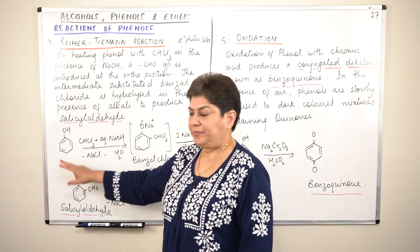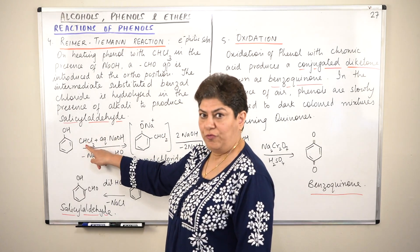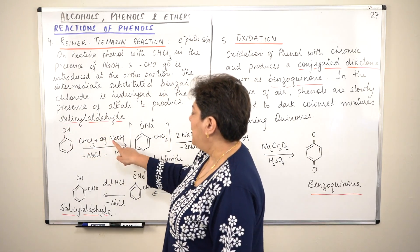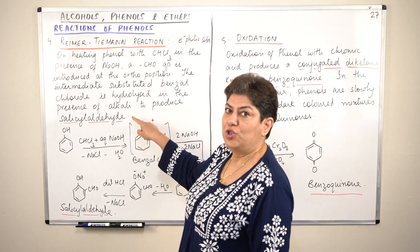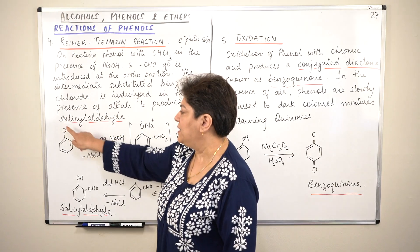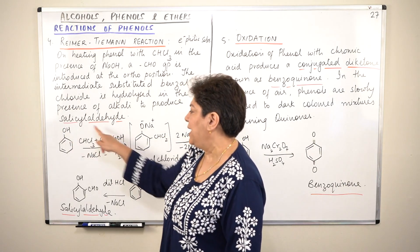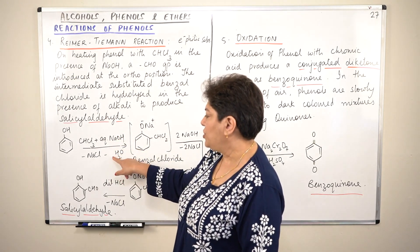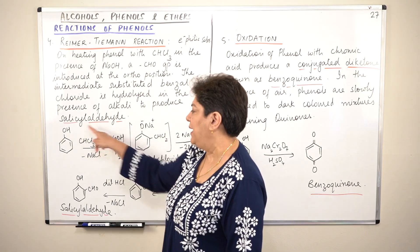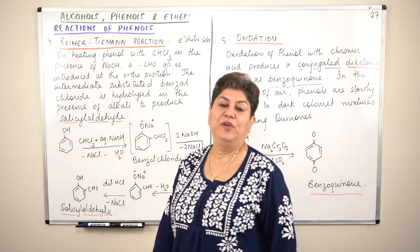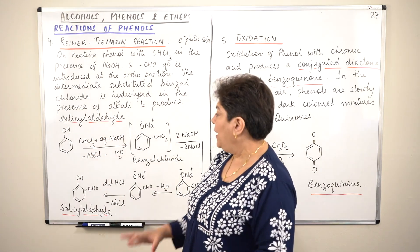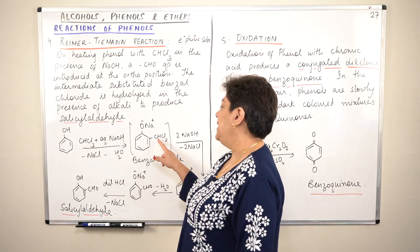Starting with phenol, we make it react with chloroform in the presence of aqueous sodium hydroxide. The H of the phenolic OH is replaced by sodium. The hydrogen comes away and combines with OH to form water, so one water molecule is removed. You get Na⁺ and O⁻. Then out of chloroform (CHCl3), a CHCl2 group is added at the ortho position.